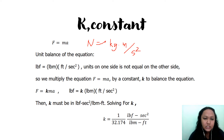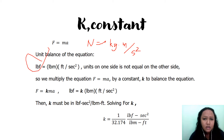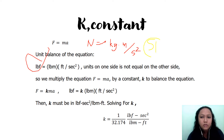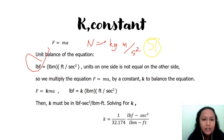In SI, the equation is balanced: one newton equals one kilogram-mass per second squared. However, in the English unit, pound-force on one side does not equal pound-mass times feet per second squared on the other side. To balance this equation, we need to multiply by a constant k.